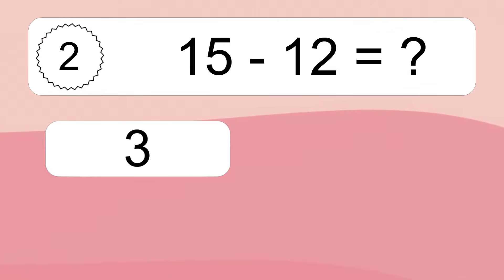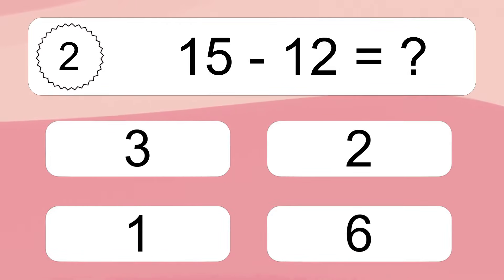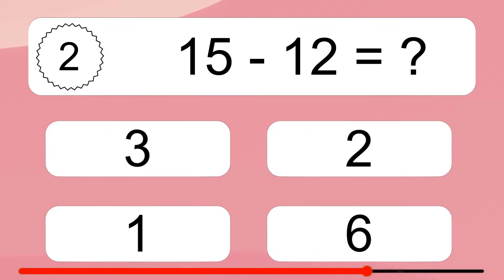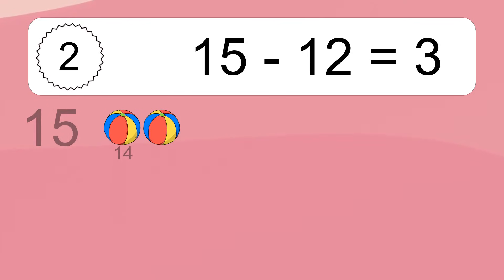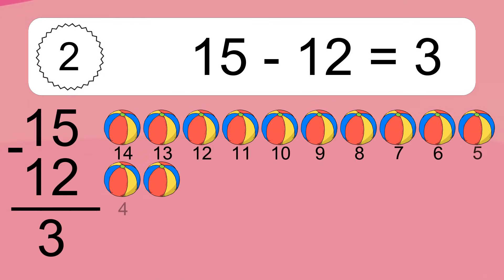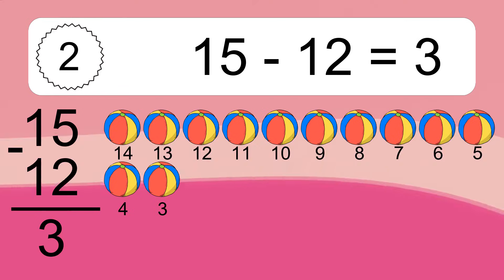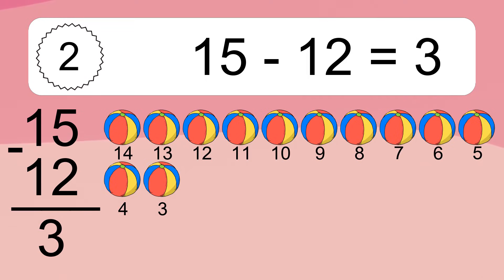15 minus 12 equals what? 15 minus 12 equals 3. Let's count it: 14, 13, 12, 11, 10, 9, 8, 7, 6, 5, 4, 3.